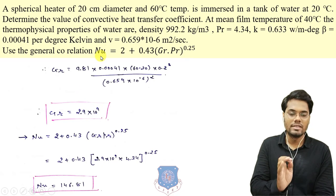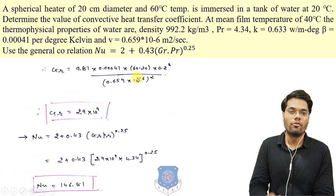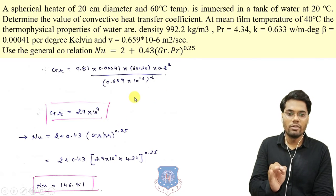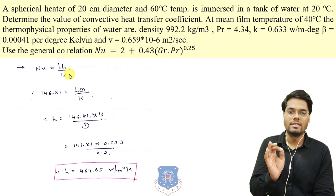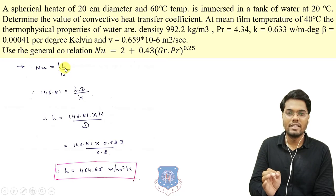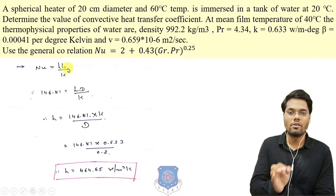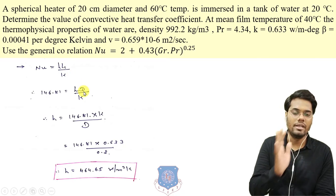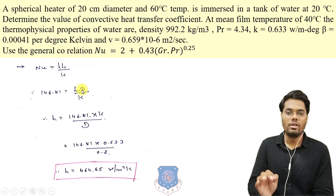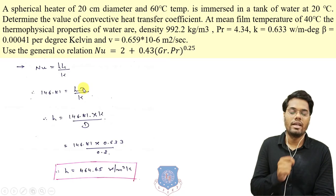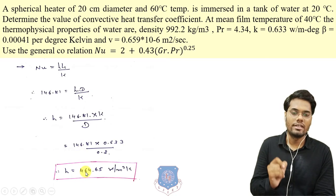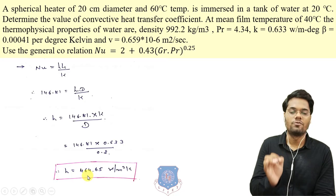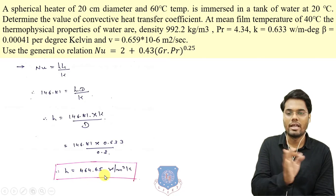Putting the values of Grashoff and Prandtl (4.34) into the given correlation, we get the Nusselt number as 146.81. Using Nu = H·D/k, with the characteristic dimension as diameter and conductivity known, only H is unknown. Solving, the convective heat transfer coefficient H = 464.65 W/m²K.